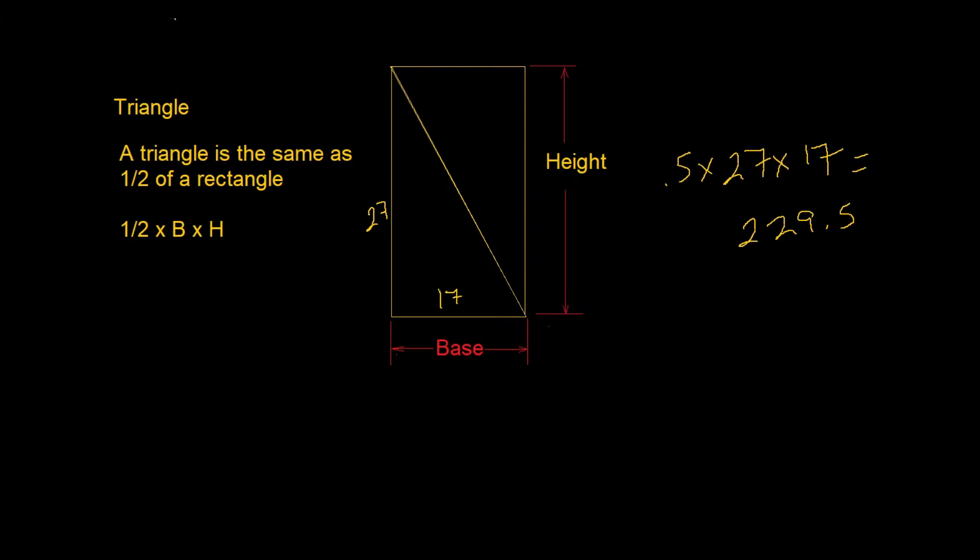We'll do another one. Let's get these out of the way. Let's say they give you the area, let's say the area was 100. This is the area times one half times the base times the height, and they only give you the base.